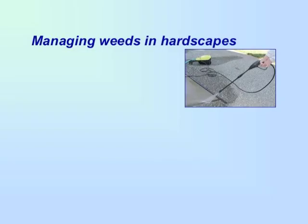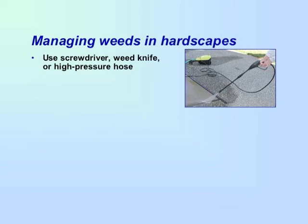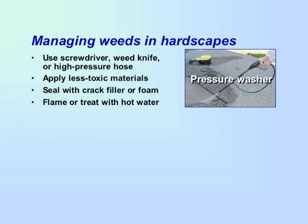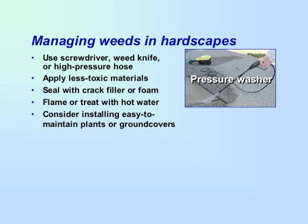Persistence is required to manage weeds in sidewalk cracks, parking lots, and along building perimeters. Hand weeding with a screwdriver or weed knife is probably the safest and most effective method for removing weeds in these areas. However, a high pressure hose or pressure washer may be more practical for large areas. Less toxic contact materials containing plant-based or organic-based materials such as eugenol or cinnamon oil, or non-selective herbicides such as glyphosate, may be somewhat effective if applied in cracks. You can try to seal cracks with crack filler or foam products available from home and garden stores. Flaming and hot water treatments are somewhat effective for managing weeds in cracks. Instead of maintaining hardscapes, consider installing easy-to-maintain plants or ground covers.